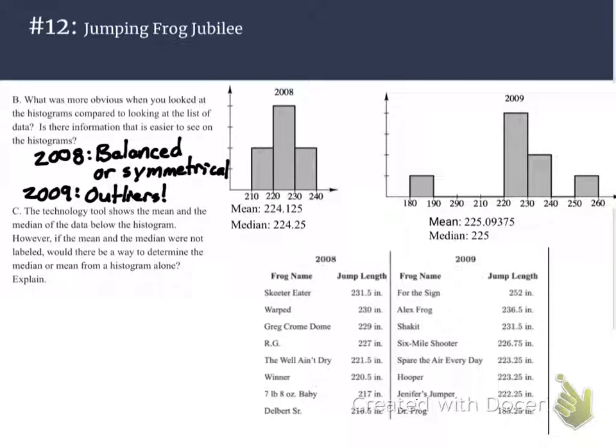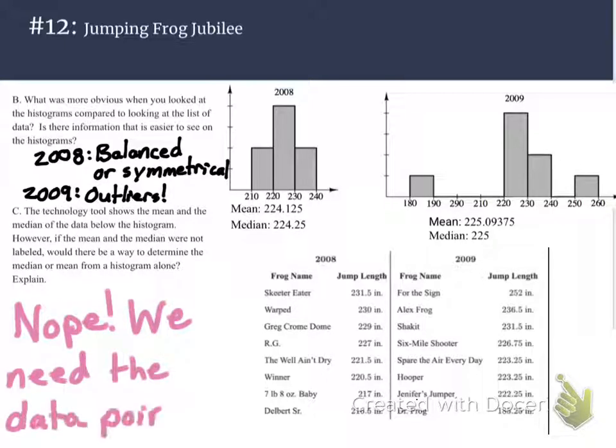If you haven't yet written down your answer, pause the video and write down your answer. If you have, the answer is no. No, you cannot find the mean or the median just by looking at the histogram because you need data points. The mean, you have to know what each data point is in order to add it up and divide by how many numbers there are. And the median, you need to know each data point in order to find the very center.